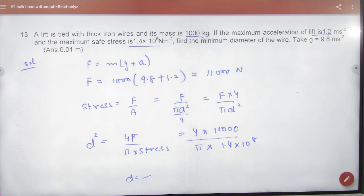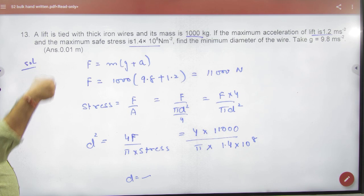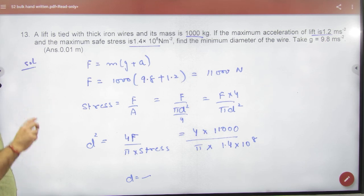A lift is tied with thick iron wires and its mass is 1000 kg. If the maximum acceleration of the lift is given and maximum safe stress is given, find the minimum diameter of the wire. Dekho hai ek badi simple si baat hai. Stress given hai na to formula stress ka force by area.